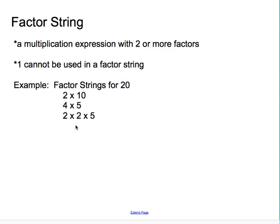Maybe on your list for 16, besides 4 times 4, you might have had 2 times 8. That's another factor string for 16. Maybe you even had 2 times 2 times 4, or 2 times 2 times 2 times 2. Those would all be factor strings for 16.